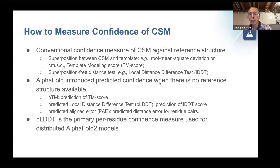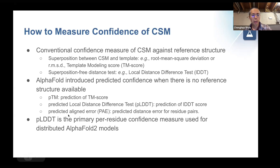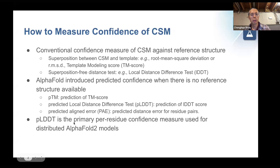But what if there's no reference structure available? AlphaFold 2 introduced the predicted TM score (pTM), the pLDDT — which is a predicted LDDT — and the PAE, which is the predicted aligned error for residue pairs. I will focus on pLDDT because it is the primary per-residue confidence measure used in the distributed AlphaFold 2 models.